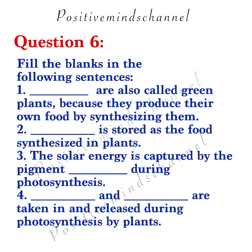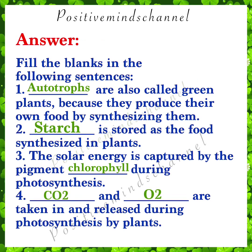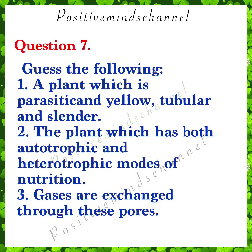Question 6: Fill in the blanks. Answers: 1. Autotrophs are also called green plants because they produce their own food by synthesizing it. 2. Starch is stored as the food synthesized in plants. 3. Solar energy is captured by the pigment chlorophyll during photosynthesis. 4. CO2 and O2 are taken in and released during photosynthesis by plants.